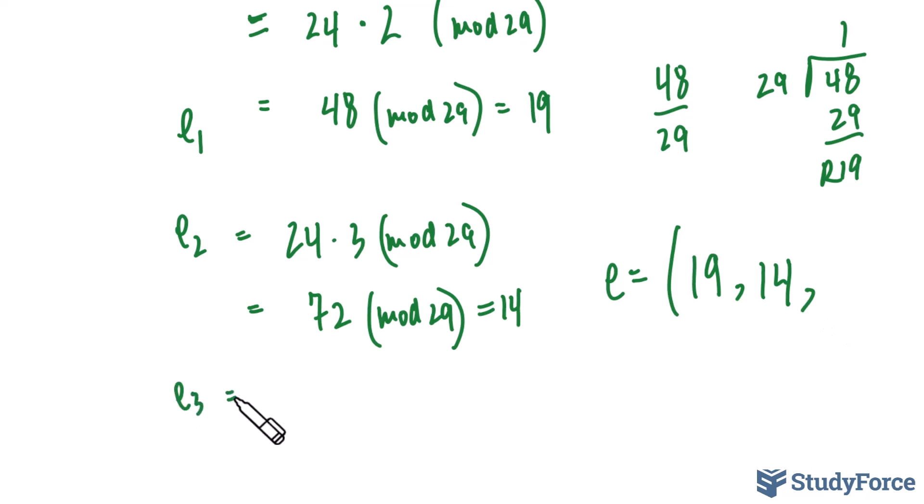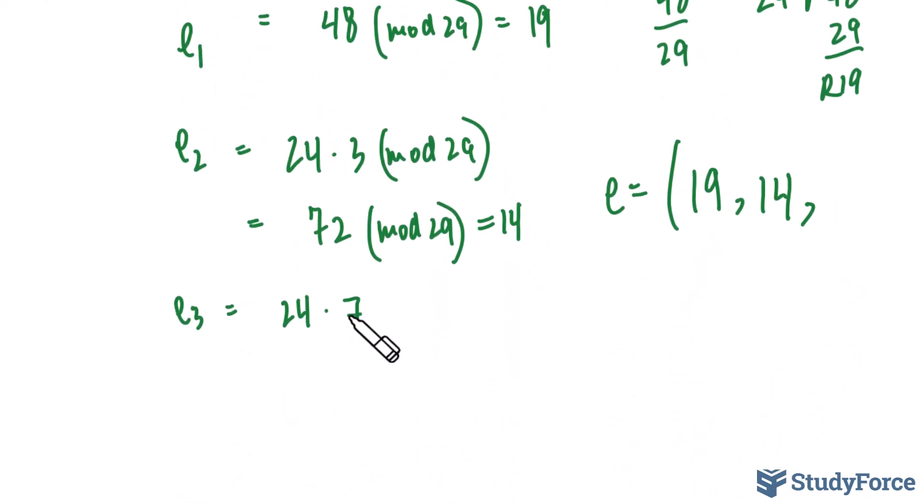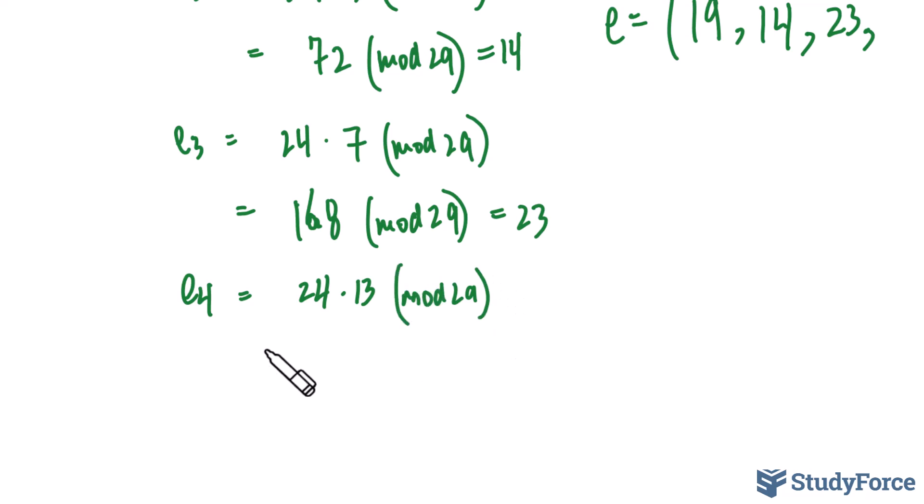For E sub 3 we take 24 again but this time we multiply it by 7. Mod 29. And the remainder after dividing 168 by 29 is 23. And for the last term in the public key we take 24 multiply it to 13 mod 29, that results into 312 mod 29 and the remainder happens to be 22.